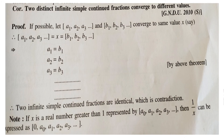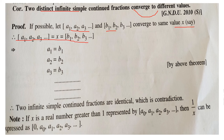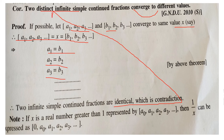Corollary: If two distinct infinite simple continued fractions converge to different values — that is, if two distinct infinite fractions exist and both converge to the same value x, then by Theorem 3 they would be identical, which is a contradiction. Therefore two distinct infinite simple continued fractions must converge to different values.